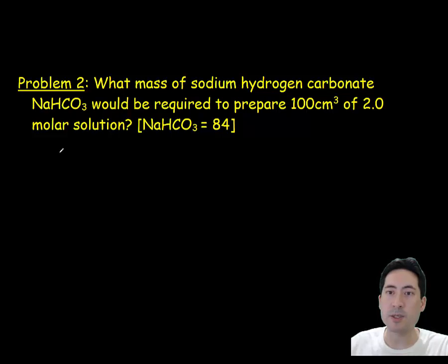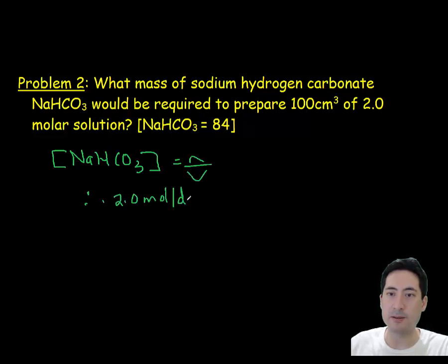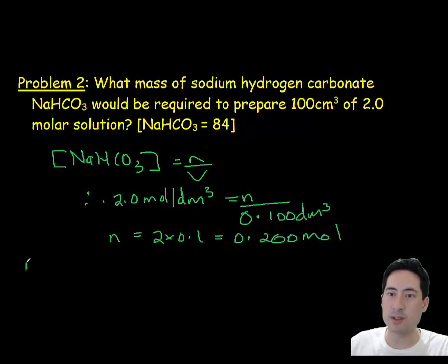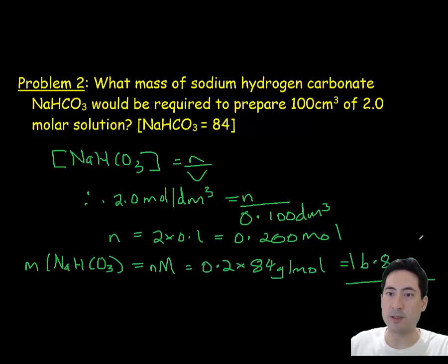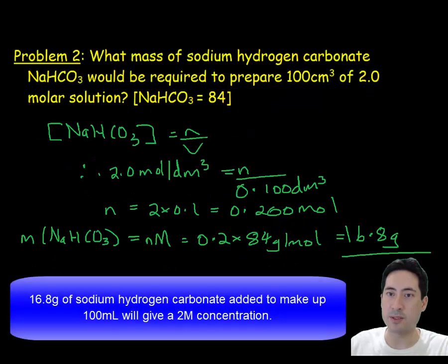The next problem here: what mass of sodium hydrogen carbonate would be required to prepare 100 milliliters of 2 molar solution? This is important for your experiments, working out what you need and how to calculate it. Concentration is number of moles and volume and we don't even need to rearrange. We can just put those numbers in there and rearrange it later. That gives us 0.2 moles is what we need. We need 16.8 grams and dilute that in 100 milliliters and that will give us our 2 molar solution.